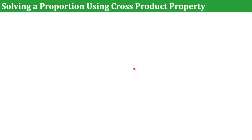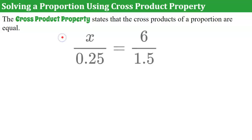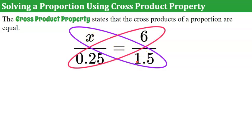Now let's look at how to solve a proportion using cross-product property. This is a second method to solve a proportion. The cross-product property states that the cross-products of a proportion are equal. We have the same proportion here. We're going to form a cross — going diagonally — and multiply. We go 1.5 times x, and then across the other way, 0.25 times 6, and make them equal to each other.